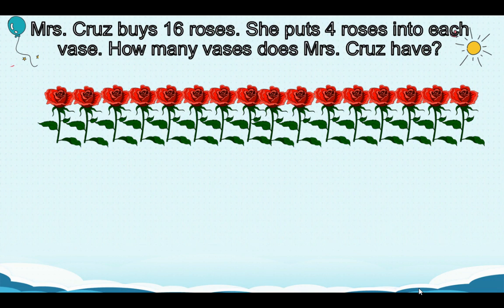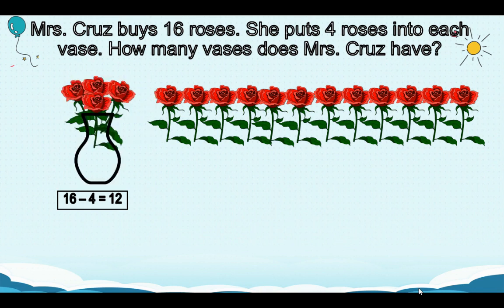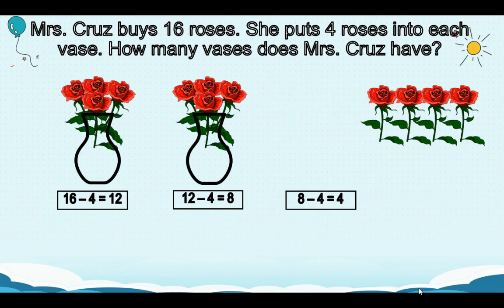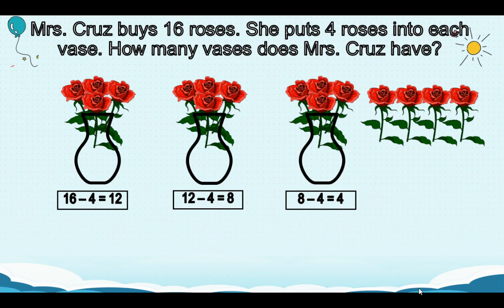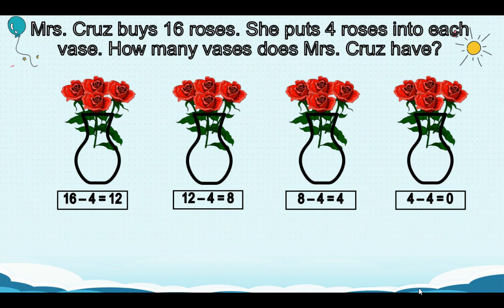Another one. Mrs. Cruz buys 16 roses. She puts 4 roses into each vase. How many vases does Mrs. Cruz have? Let's count 4 roses and put it in the vase. So, 16 minus 4 equals 12 roses left. Let's count another 4 roses and put it in the vase. 12 minus 4 equals 8 roses left. Next, put another 4 roses in the vase. So, 8 minus 4 equals 4 roses left. We'll put another 4 roses in the vase. So, 4 minus 4 equals 0. So, we did repeated subtraction.